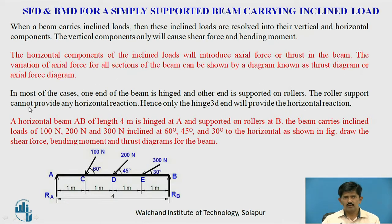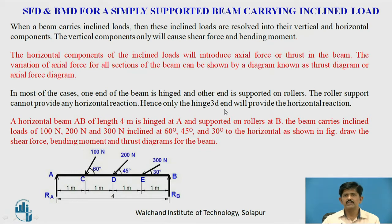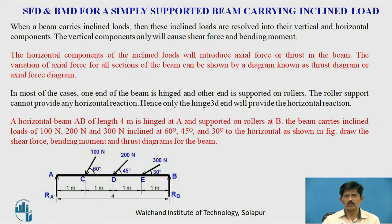In most cases, one end of the beam is hinged and the other end is supported on rollers. The roller support cannot provide any horizontal reaction; hence only the hinge end will provide horizontal reaction. The roller end allows the beam to move horizontally and will not provide horizontal reaction.